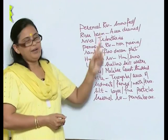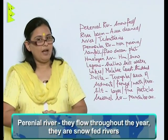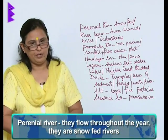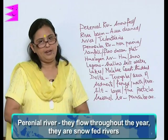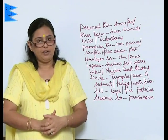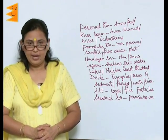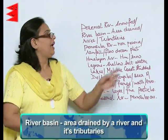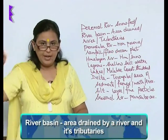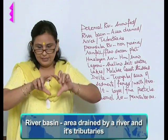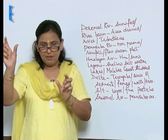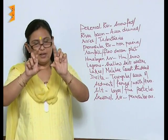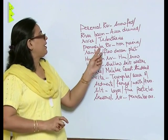The next term is perennial river. Perennial rivers are very important for the country because they flow throughout the year. They have sufficient, plentiful water and they are snow-fed rivers — a must for the development of the country as far as agriculture is concerned. Next is river basin. A river basin is an area which is drained by a river and its tributaries — that is the catchment area of a river, wherever the river and its tributaries flow.